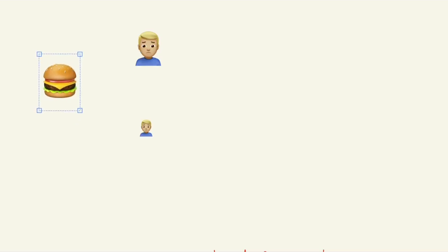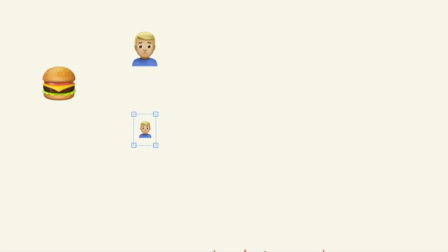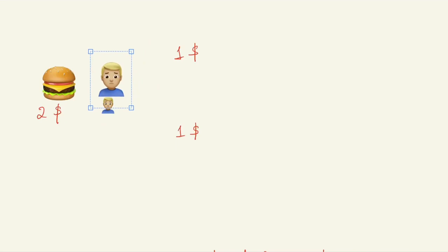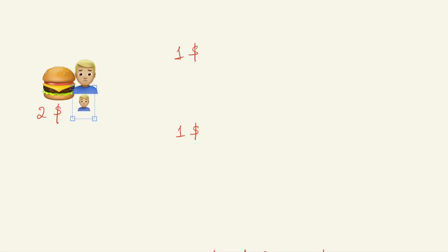To understand the difference in a more interesting way, let's take the example of a burger. Two people want to buy it, so they pool their money — this burger costs two dollars and each has one dollar, so together they buy it. In homolytic bond fission, since both bought the burger together, they split it equally between them — that's homolytic bond fission.